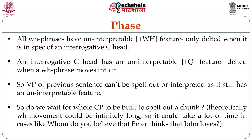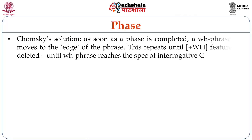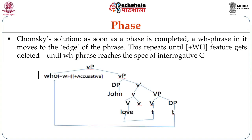So, do we wait for the whole CP to be built up before spelling out a chunk? Consider that we could have infinitely long WH-movement, in cases like whom do you believe that Peter thinks that John loves. It could take a long time to spell out one part if we wait for the whole CP. Chomsky proposed that as soon as a phase is completed, a WH-phrase moves to the edge of the phase. This repeats until the plus WH feature gets deleted — that is, until the WH-phrase reaches Spec of interrogative C. Our WH element who, the object DP under VP, gets moved to a higher specifier position of little vP: the edge of the phase of little vP.